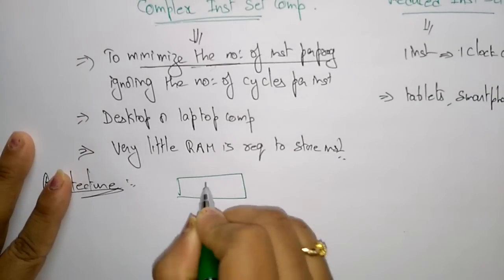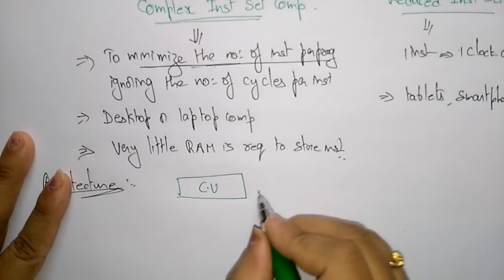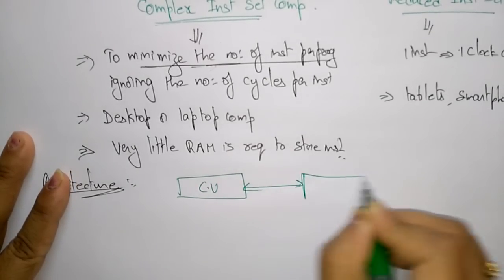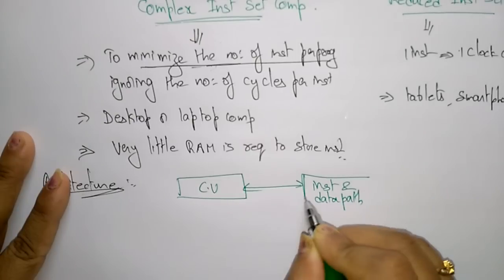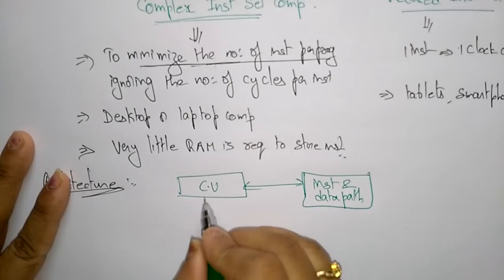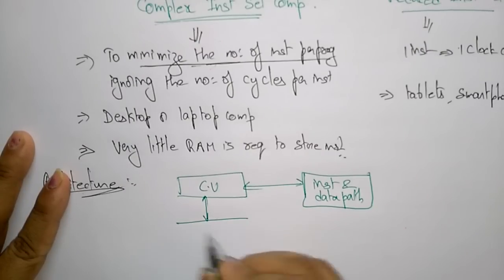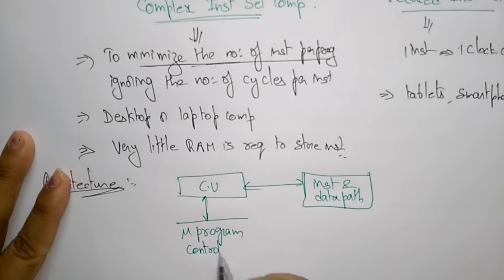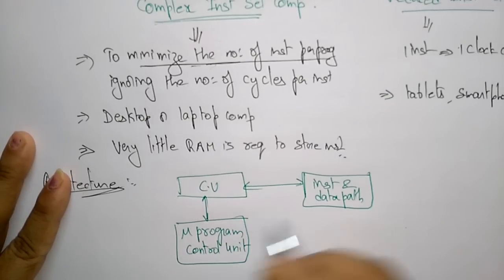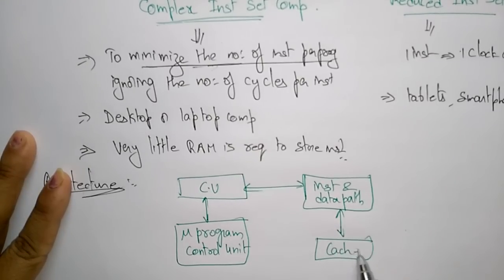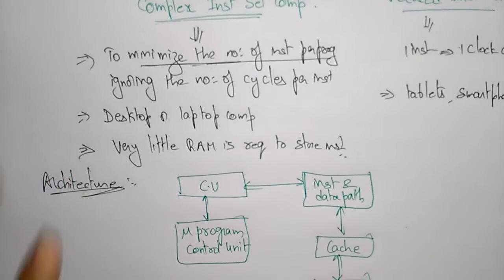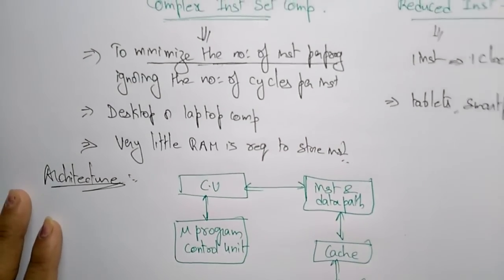In CISC processing, you have the control unit. The instruction and data path are placed in one unit. It also has a micro-programmed control unit, cache memory, and main memory. This is the overall architecture of the CISC processor.